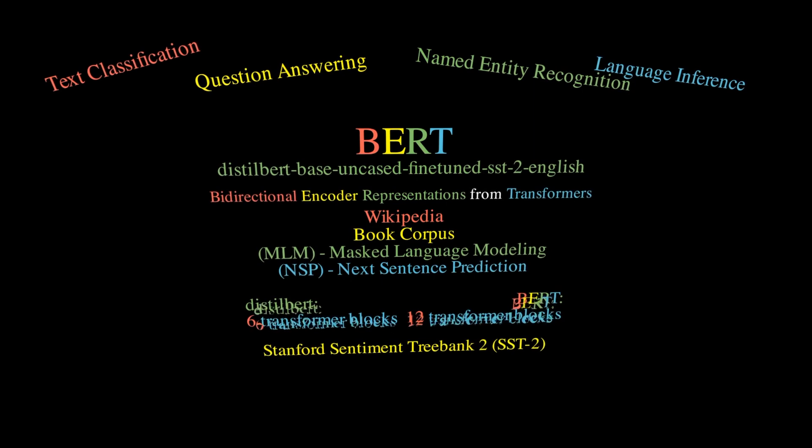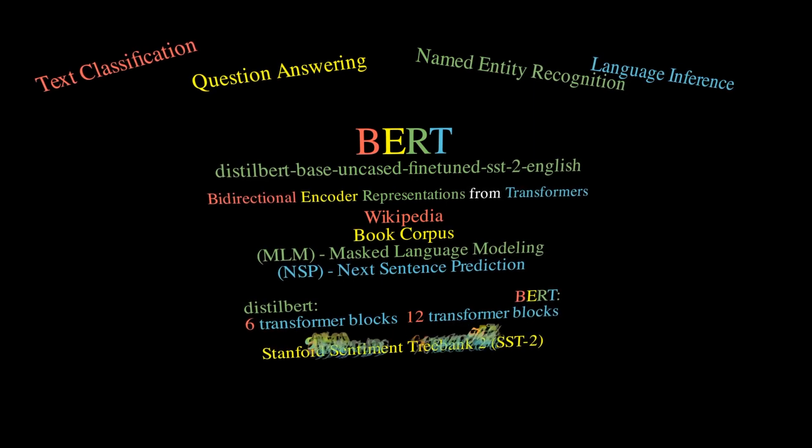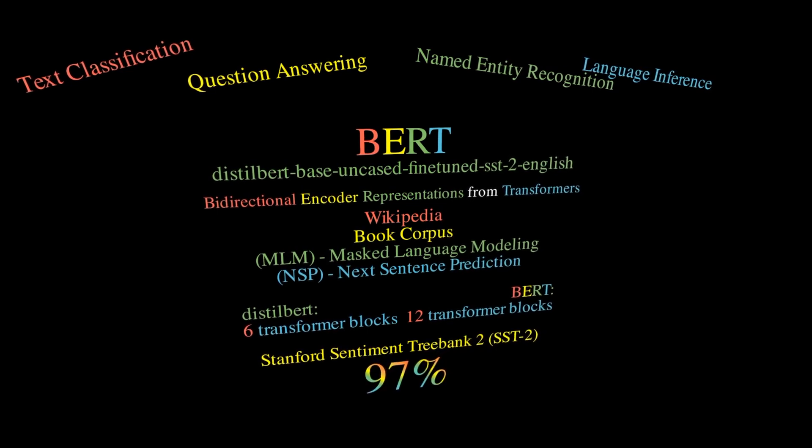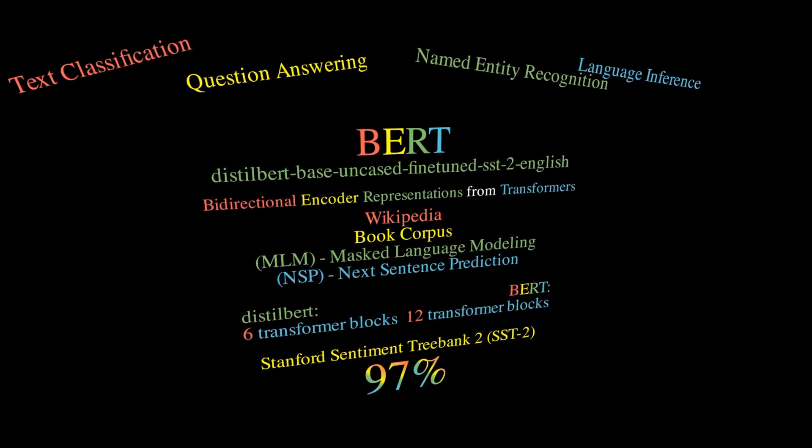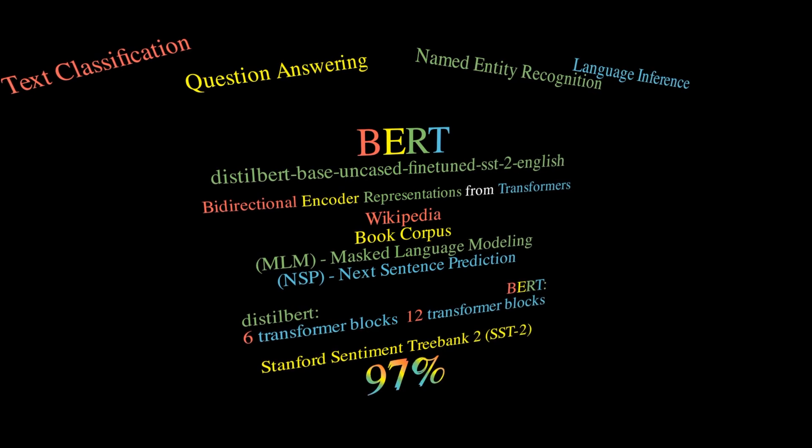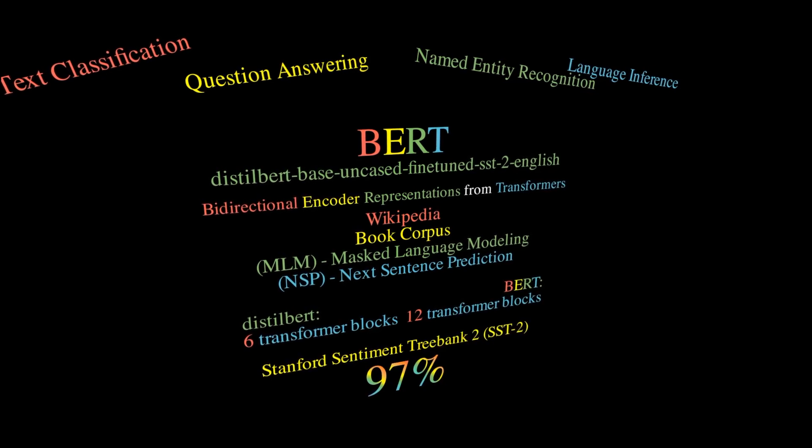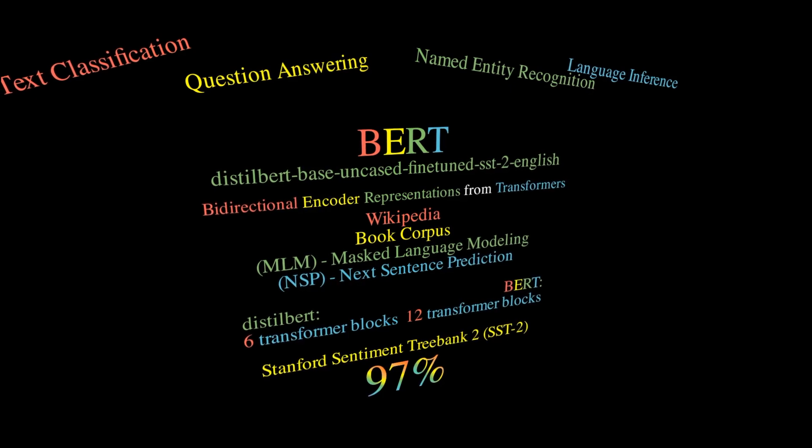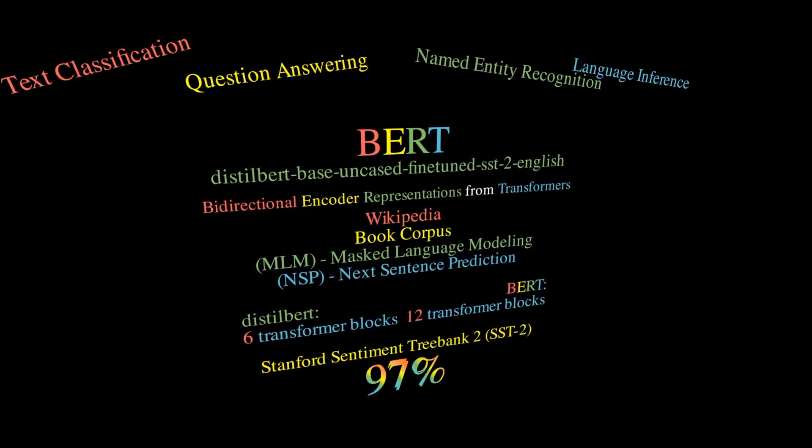Despite having half the number of layers of the original BERT model, DistilBERT retains 97% of its language understanding capabilities while being 60% faster. This makes it a compelling choice for our NLP task which is determining the sentiment of movie reviews.